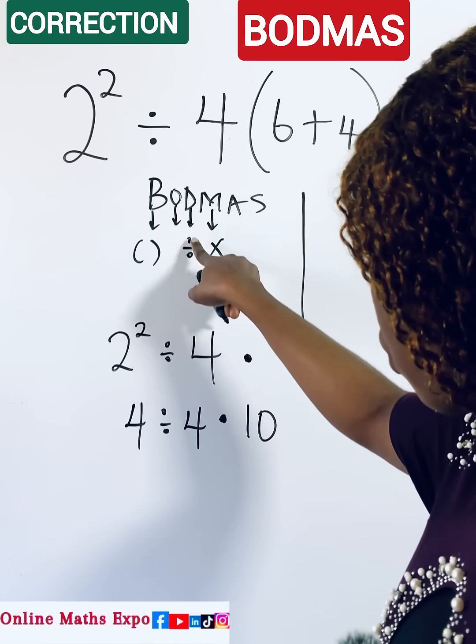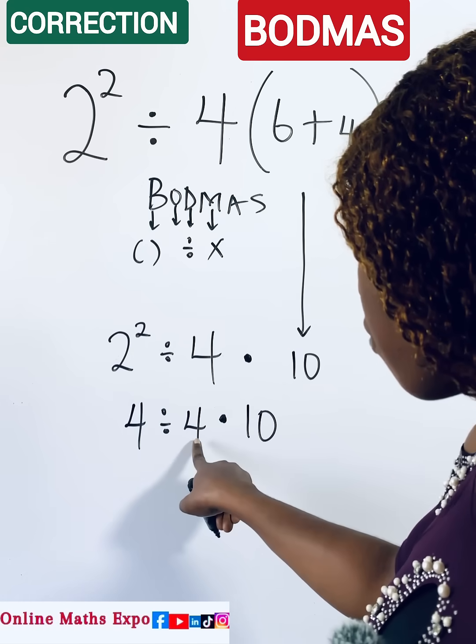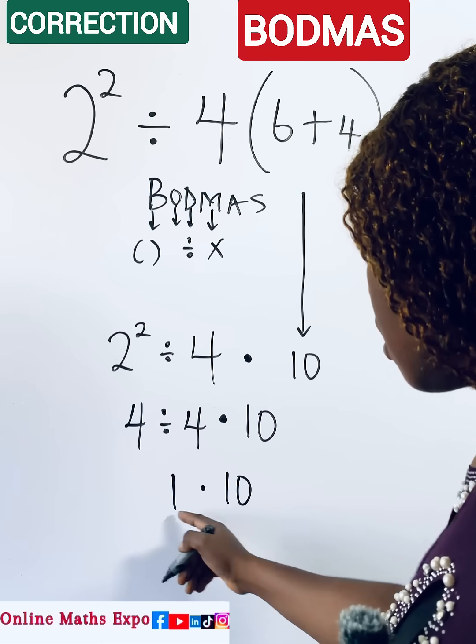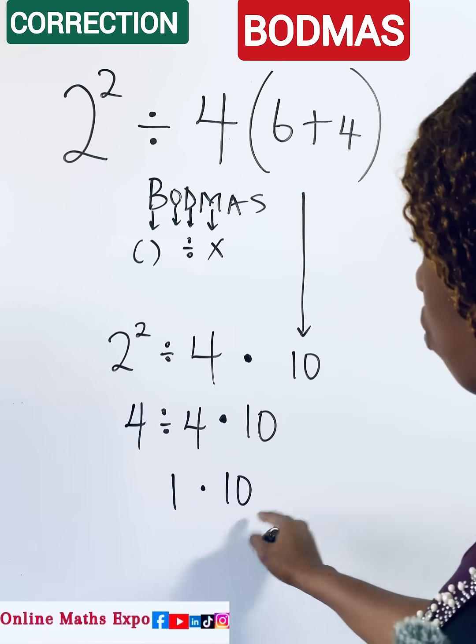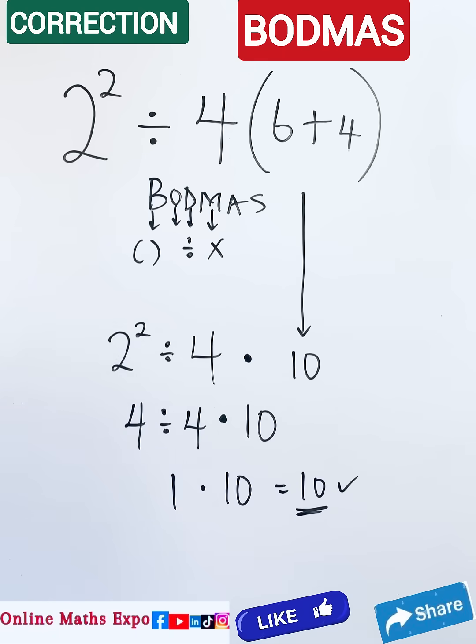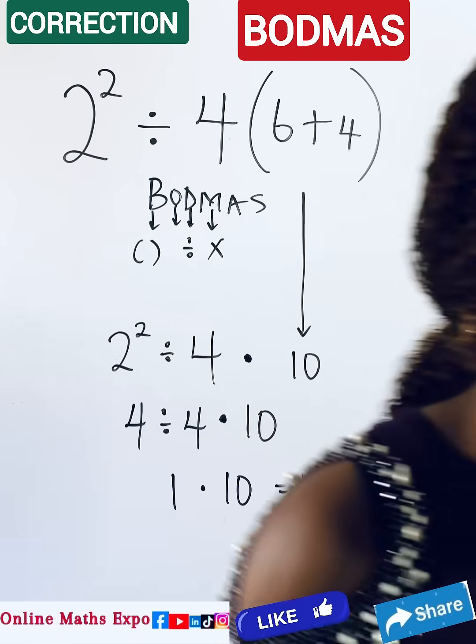Deal with division. Division is 4 divided by 4 to give us 1, then multiplied by 10. Then the next thing is to multiply, and when you multiply this, it gives you 10 as an answer. Let's see how to use PEMDAS.